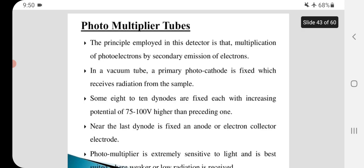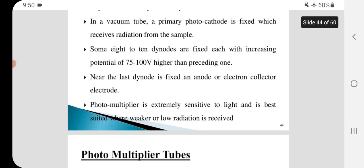Near the last dinode is fixed an anode or electron collector electrode. Photomultiplier is extremely sensitive to light and is best suited where weaker or lower radiation is received.